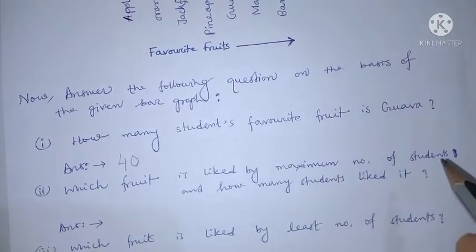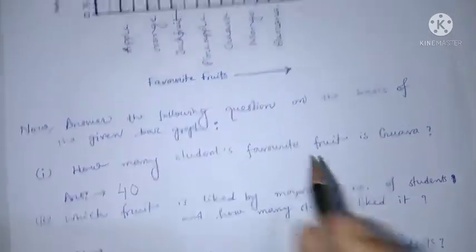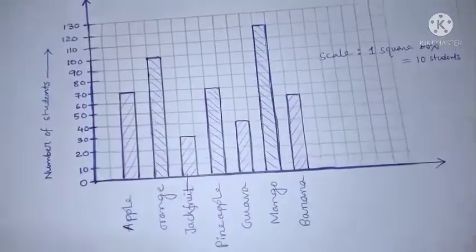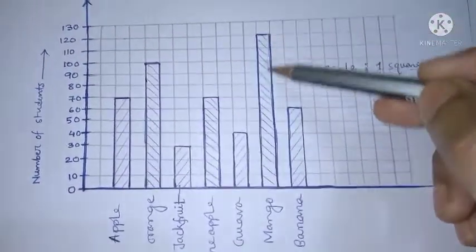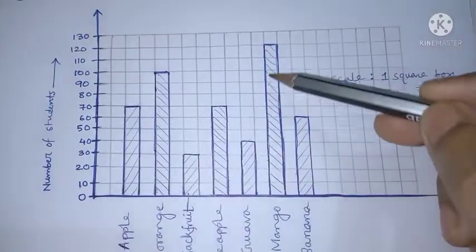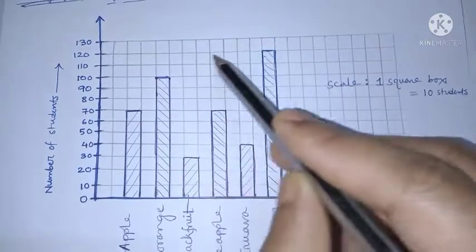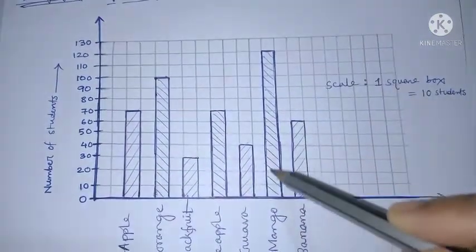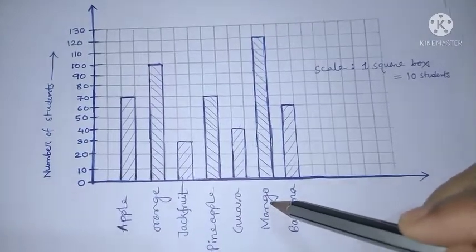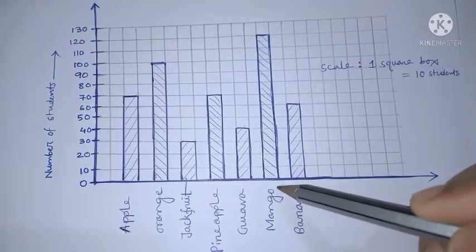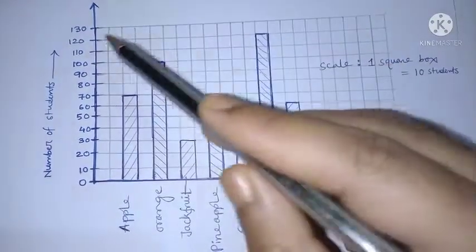Which fruit is liked by the maximum number of students? We have to see the highest height — that is 120. The fruit is mango, liked by 120 students.